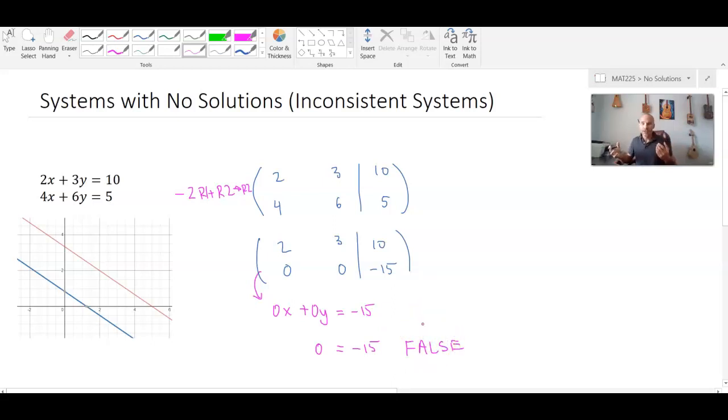When we're conducting elimination or we're conducting this reduction using Gaussian elimination and we come up with any row in which all the coefficients disappear but we're left with some non-zero constant, we know we're going to have no solutions. So this system has no solutions.